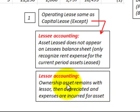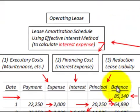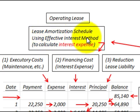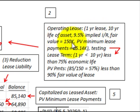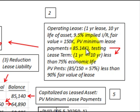Let's go look at our example. First, we're going to have to set up a lease amortization schedule using the effective interest method, just to calculate the interest expense on this lease. Looking at our example, we have an operating lease with a one-year lease term, a ten-year economic life of the asset, a nine-and-a-half percent implied interest rate, and a fair value of $150,000. We calculate the present value of our minimum lease payments to be $85,140.